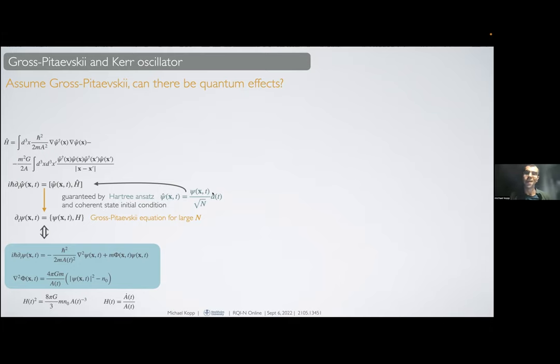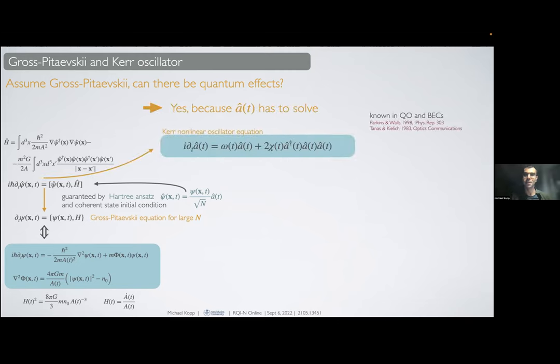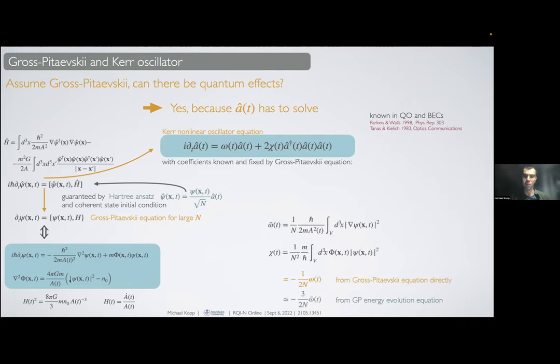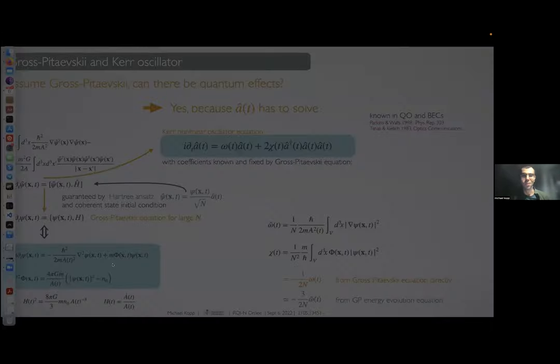But on top of that you also get an equation for the field operator that actually creates particles in the Gross-Pitaevskii mode, and the equation of motion is known as the Kerr nonlinear oscillator equation. You have for this in front of the linear and cubic terms of the Gross-Pitaevskii mode operator two coefficients, ω and χ.